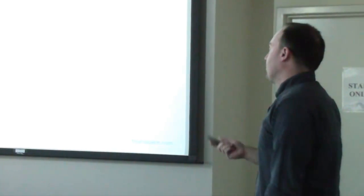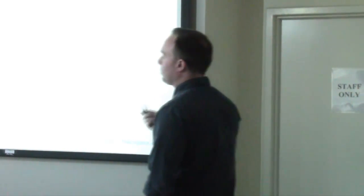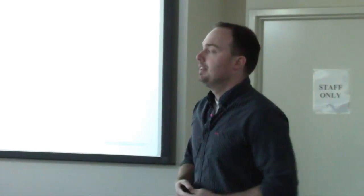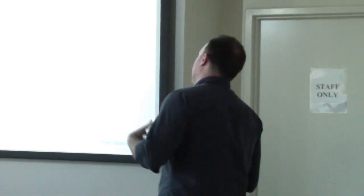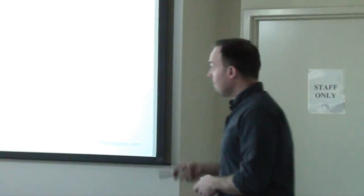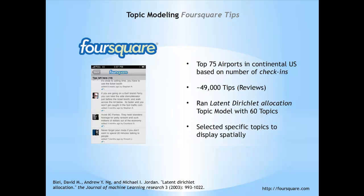A lot of the research I do uses Foursquare, which is a location-based social network that allows you to check in at locations and leave tips or reviews. Taking this data, people can leave specific bits of information at airports. I took the top 75 airports in the continental US based on number of check-ins — the amount of times people actually check into a specific location using their smartphone — which correlates nicely to boarding times or number of flights leaving a specific airport.